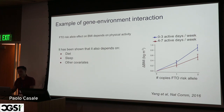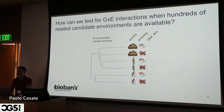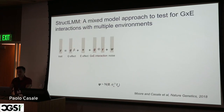For the same variant it's been shown that its effect also depends on diet, sleep, and other covariates. If we now consider deep phenotyping data like those available at UK Biobank, where we have hundreds of related candidate environments that may drive a G×E interaction, how can we develop a test to effectively test for interaction with all these different environmental covariates? In UK Biobank we have examples of activity phenotypes, smoking, diet, and other lifestyle factors — and these are correlated with each other, creating an environmental sample structure intrinsic in the data.